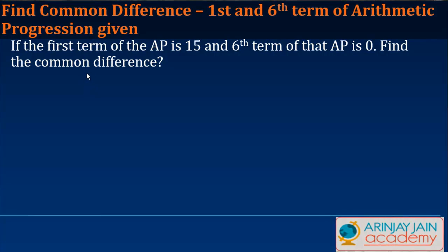In this video we will find out the common difference when the first and the sixth term of an arithmetic progression are given. If the first term of an AP is 15 and the sixth term of that AP is 0, find the common difference.